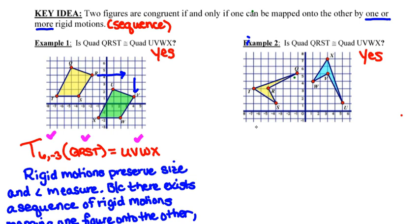I'm going to name that sequence of rigid motions. So I'm going to say a rotation about the origin of 90 degrees will map UVWX, the blue one, onto the yellow one, which is QRST. And again, notice that when I use function notation, I name my transformation, I put my input in parentheses, my output to the right side of the equal sign.